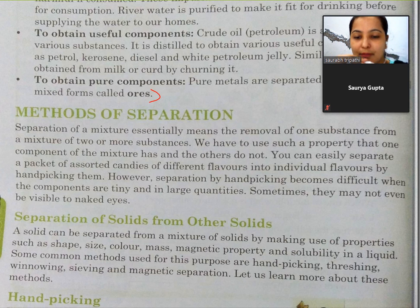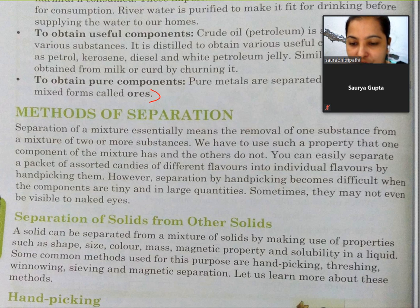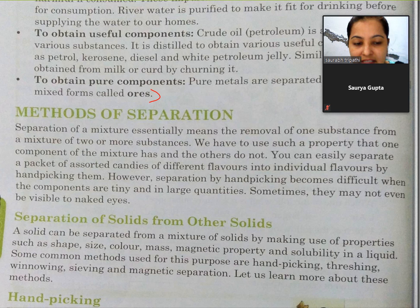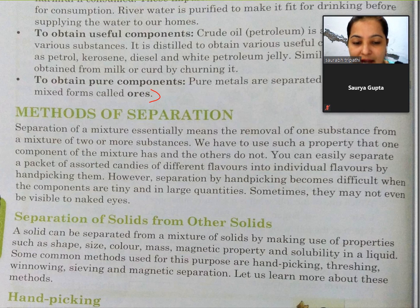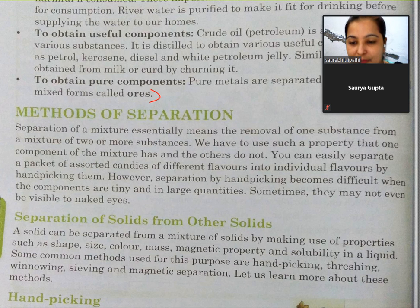Methods of Separation. Separation means alag karna. Separation of a mixture essentially means the removal of one substance from a mixture of two or more substances. We have to use such a property that one component of a mixture has and the others do not. You can easily separate a packet of assorted candies of different flavors by handpicking them. However, separation by handpicking becomes difficult when the components are tiny and in large quantities. Sometimes they may not even be visible to naked eyes.